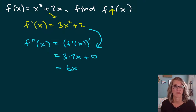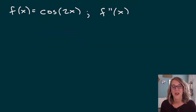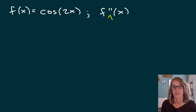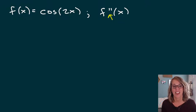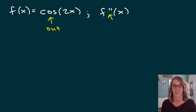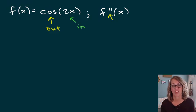Let's do another example. For this cosine of 2x, I need to find the second derivative, which means I'm going to apply the derivative twice. This one does have a composition, so I've got as my outer function cosine of 2x, and I also have that inner function of 2x. We're going to apply a chain rule as we go through the first derivative.